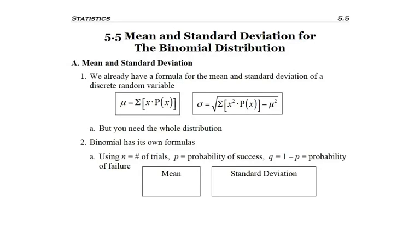So now we're going to look at the mean and standard deviation for a binomial distribution. We've already done it for a discrete random variable and gotten these two formulas here, which we did in the beginning of Chapter 5, but the thing with those is you need the whole distribution. You need an entire table, so you need to solve it for every x, which we could do for the binomial, but it's not necessary.